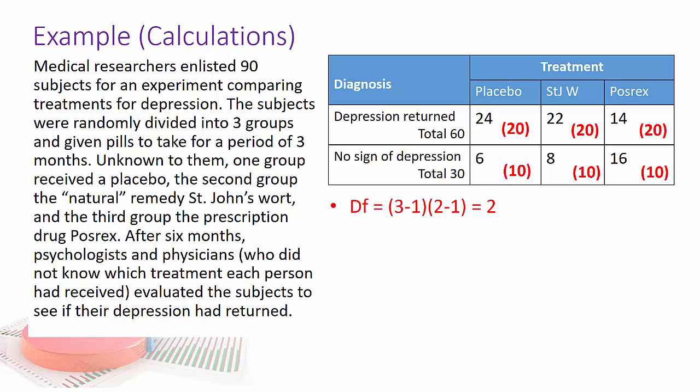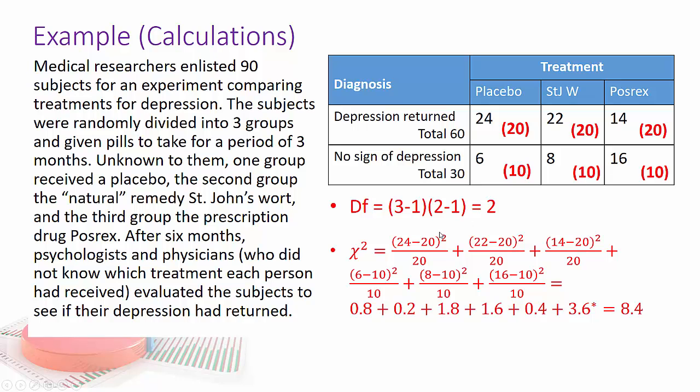So degrees of freedom, we have three columns minus one times two rows minus one, and that's two times one, which is two degrees of freedom. My chi squared, I'm basically subtracting 24 minus 20, squaring that, dividing by 20, 22 minus 20 squared, dividing that by 20, and so forth through the whole table. And I basically get a chi squared value of 8.4.